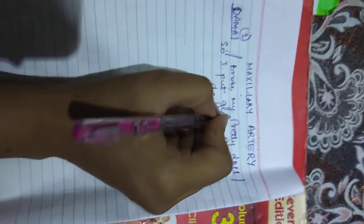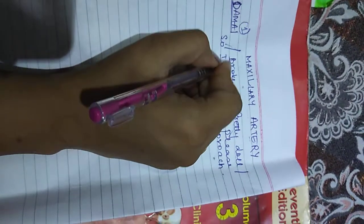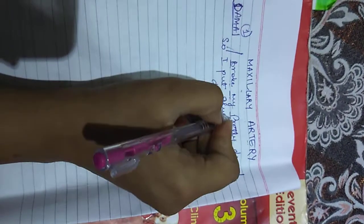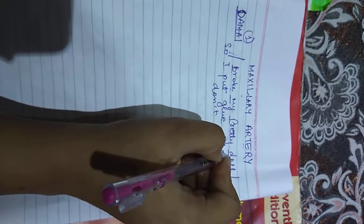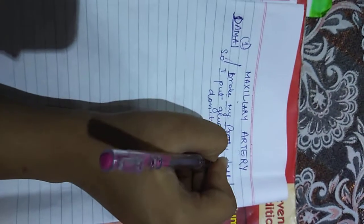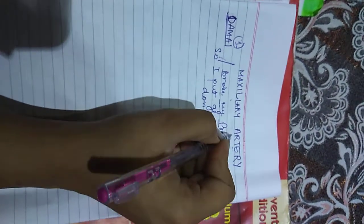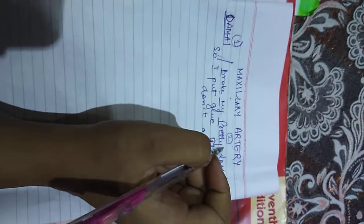Broke my pretty doll - we'll be taking the first alphabet of the sentence in consideration, that is B, M, P, and D. All these represent the further four branches of the second part of the maxillary artery.